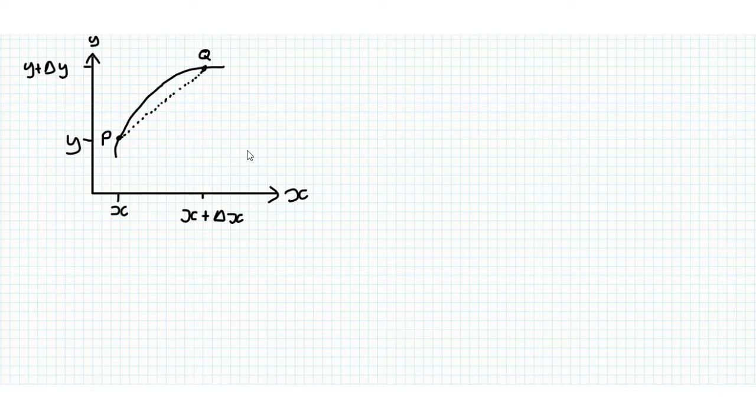Right, so we've got here a graph representing the function y equals f of x. We've got two points on the line, P and Q. P is at coordinates x, y. Q is at coordinates x plus delta x and y plus delta y, where delta x is the difference between x and x plus delta x.